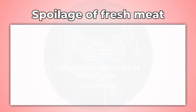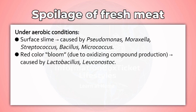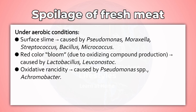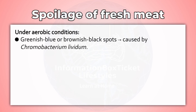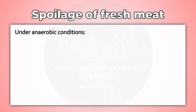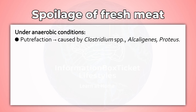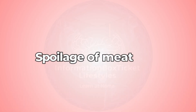Microorganisms cause different defects in fresh meat depending on oxygen availability. Under aerobic conditions: surface slime caused by Pseudomonas, Moraxella, Streptococcus, Bacillus, and Micrococcus; red color bloom due to oxidizing compound production caused by Lactobacillus and Leuconostoc; oxidative rancidity caused by Pseudomonas species and Achromobacter; red spot caused by Serratia marcescens; blue color caused by Pseudomonas syncyanea; greenish-blue or brownish-black spots caused by Chromobacterium lividum; stickiness, whiskers, and green patches caused by molds. Under anaerobic conditions: putrefaction caused by Clostridium species and Alkaligenes and Proteus; souring caused by lactic acid bacteria.